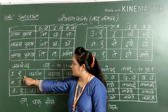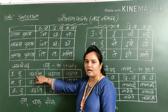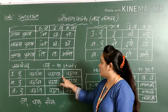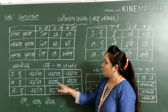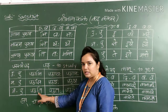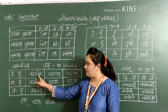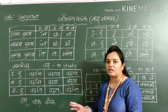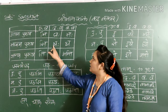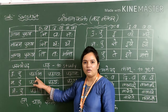So here in Uttam Purush we have to add 'a'. We have to add the suffix 'a' at the join. So: pathami, pathavaha, pathamaha. Pathasi, pathataha, pathataha. Pathati, pathataha, pathanti. The question may arise in your mind — pathami, so 'a' is added. So you can also say: ami, avaha, amaha, si, thaha, thaha, ti, thaha, anti. That is also correct. But directly, we have to add 'a' over here.